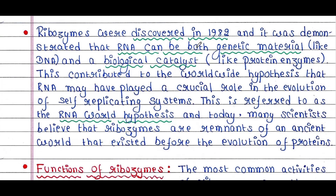Ribozymes were discovered in 1982, and it was demonstrated that RNA can be both genetic material just like DNA and a biological catalyst just like a protein enzyme. This contributed to the worldwide hypothesis that RNA may have played a crucial role in the evolution of self-replicating systems, referred to as the RNA world hypothesis.